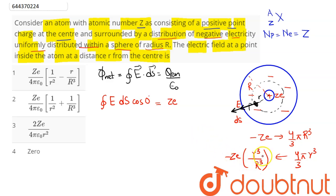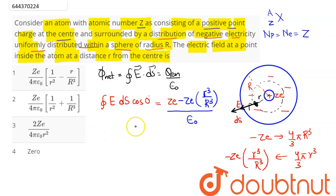Substituting this value, the total enclosed charge becomes −ZE·(r³/R³), and dividing by epsilon naught gives the right-hand side. Since the electric field is uniform over the Gaussian surface, E comes outside the integral, and integrating the area vector gives 4π·r².